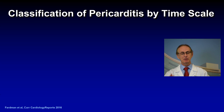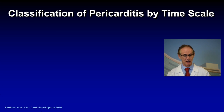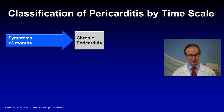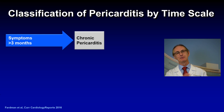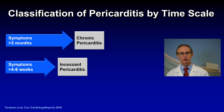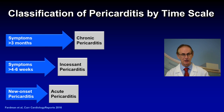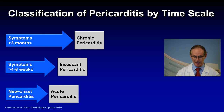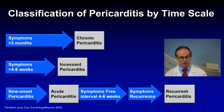Let me review the classification of pericarditis based on time scale. Chronic pericarditis has symptoms over three months. Incessant pericarditis has symptoms continuous for more than four to six weeks but less than three months. Acute pericarditis is really the initial presentation. And if you get a symptom-free interval of four to six weeks, this is called recurrent pericarditis.